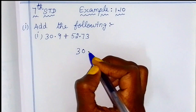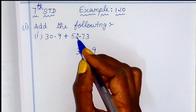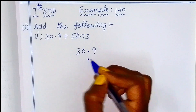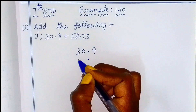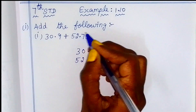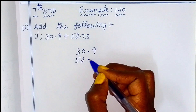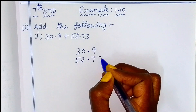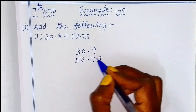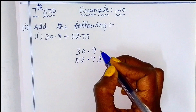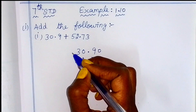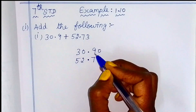First one is 30.9. Then we can add the decimal point first, straight. Then the whole number is 52. Then the decimal point. There are 2 digits. Now the first number, then we can separate. Now we have space, we can add zero. If we have a whole number before, we can add zero.